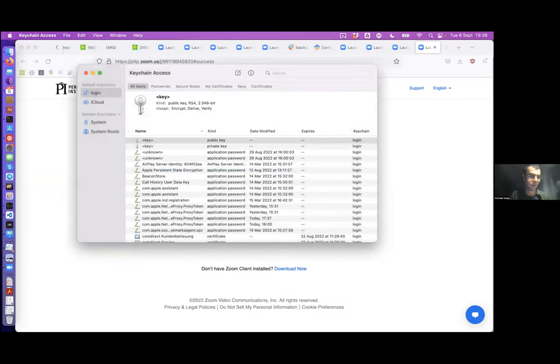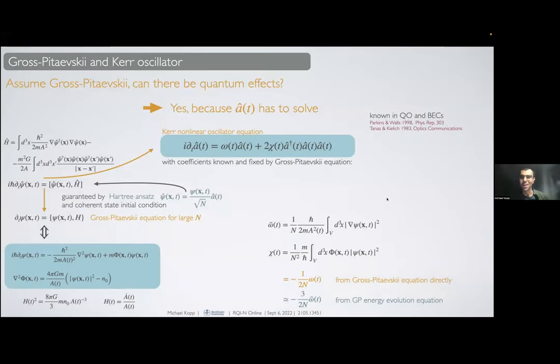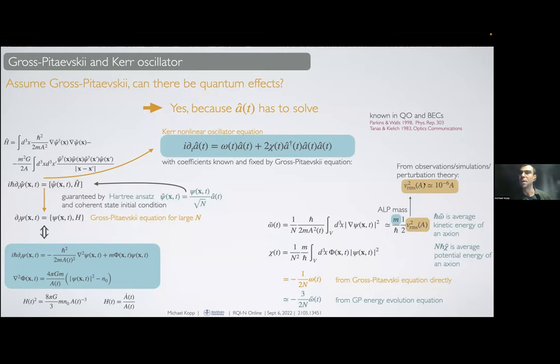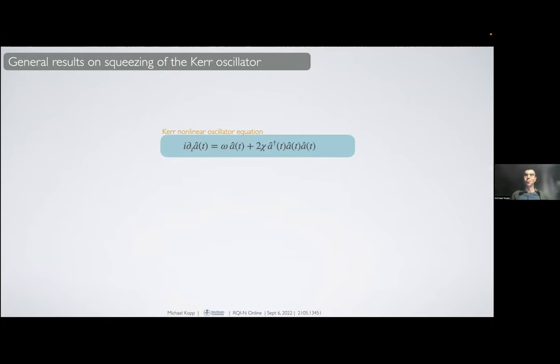Knowing what the solution to this equation is, you can determine these parameters, and the interpretation is that this is related to kinetic energy and this is related to gravitational potential energy. You can work out what these coefficients are. They are related to the axion-like particle mass and its root mean velocity squared, which is about 10^-6 times the speed of light.